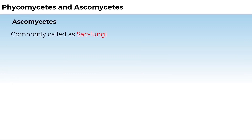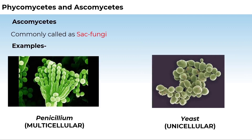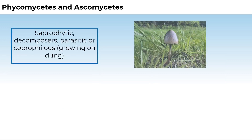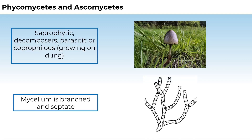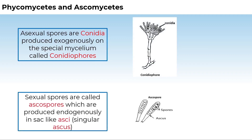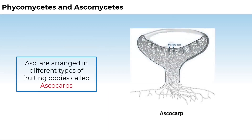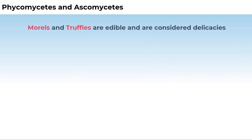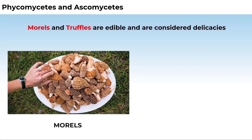Commonly known as sac fungi, Ascomycetes are mostly multicellular, for example Penicillium, or rarely unicellular, for example yeast. They are saprophytic, decomposers, parasitic, or coprophilous (growing on dung). Mycelium is branched and septate. Asexual spores called conidia are produced exogenously on special mycelium called conidiophores. Sexual spores called ascospores are produced endogenously in sac-like asci (singular: ascus), which are arranged in fruiting bodies called ascocarps. Examples are Aspergillus, Claviceps, and Neurospora. Morels and truffles are edible members considered delicacies.